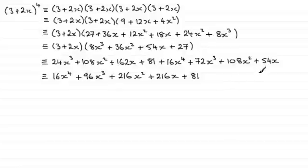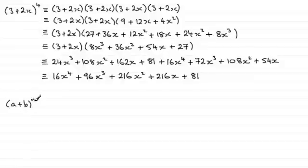There's a formula I'm going to give you here, without any proof, but we just need to be able to use it. If you've got (a + b) all to the power n — something like we've got here where a is the 3, b is the 2x, and n is the power 4.